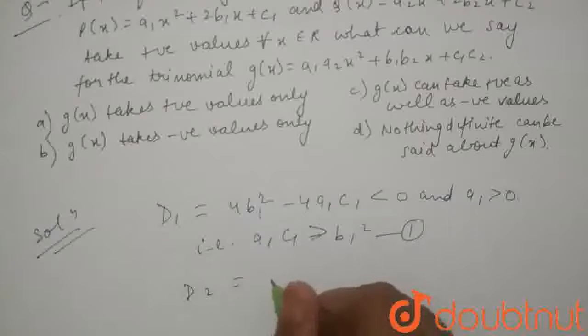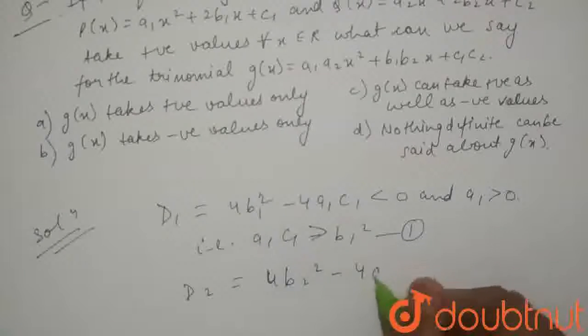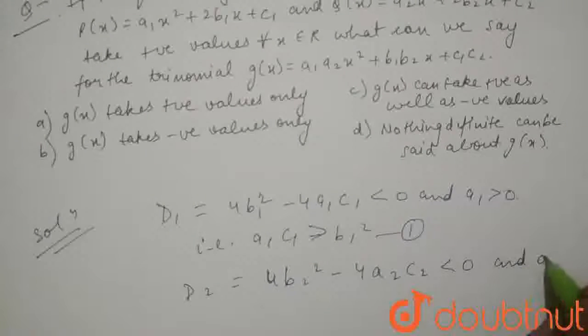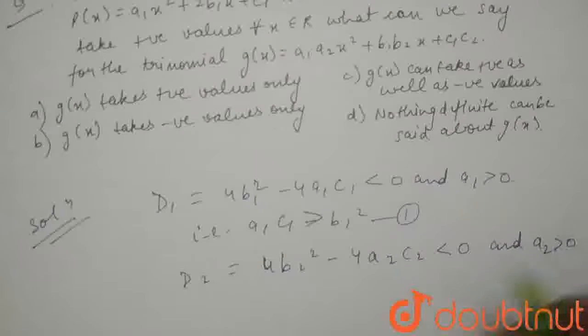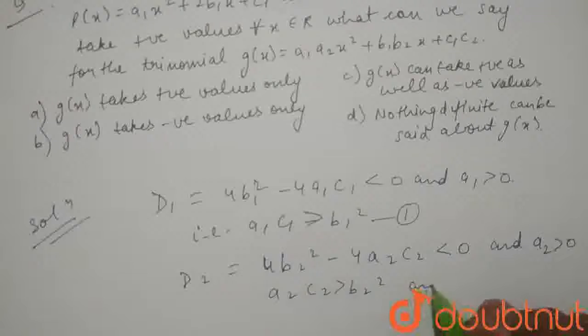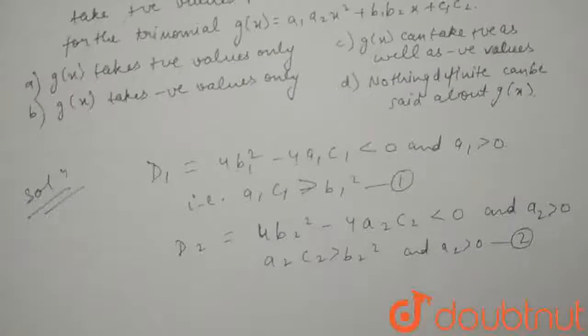Similarly, D₂ = 4b₂² - 4a₂c₂ < 0 and a₂ > 0. Hence, a₂c₂ > b₂² and a₂ > 0. This is equation 2.